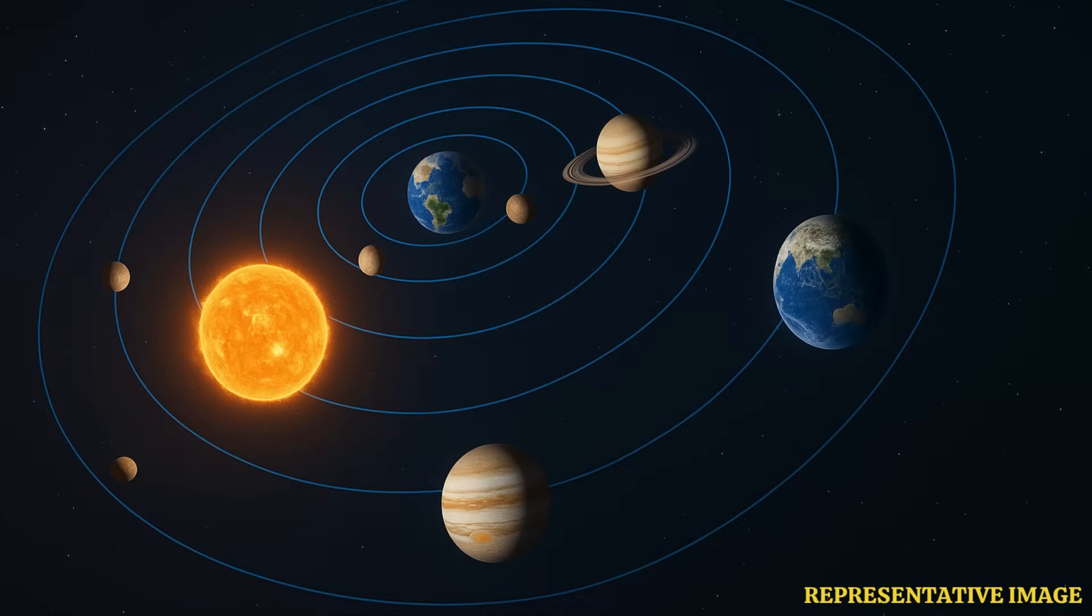He added that hidden worlds like this are a class of planets that should definitely exist but have received relatively little attention until now. In case there is a planet in the Oort cloud, it is likely to be an ice giant.